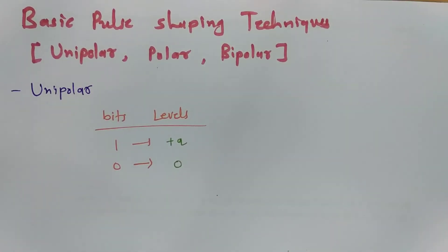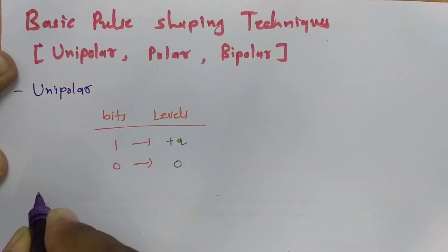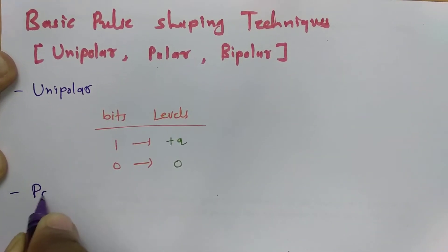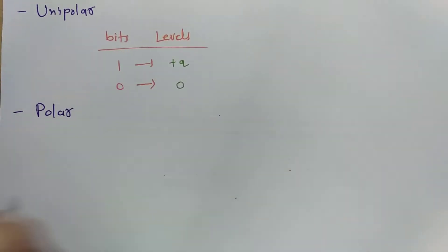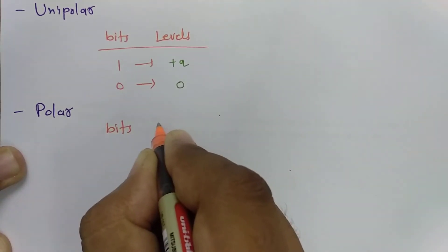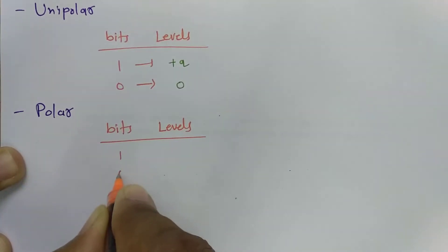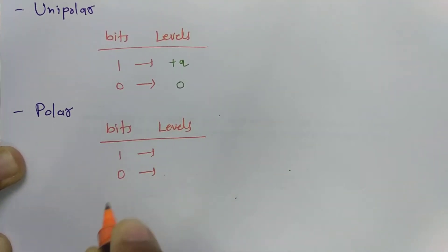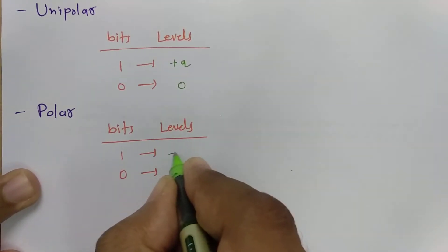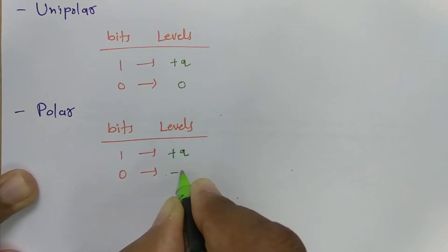When we talk about the polar pulse shaping technique, we assign bits with voltage levels where bit 1 is assigned plus A voltage and bit 0 is assigned minus A voltage.